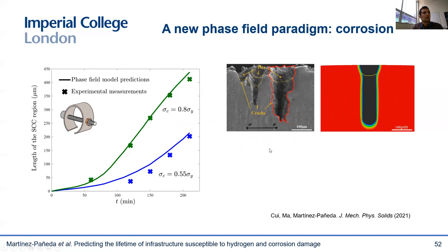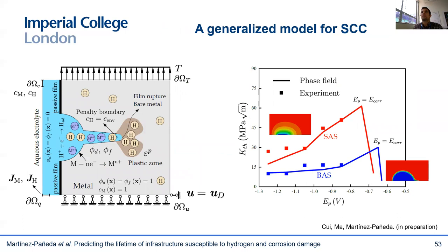I anticipate that we will see a revolution similar to what we have seen with phase field modeling of microstructural evolution and fracture mechanics. Last but not least, we have recently developed a generalized formulation for stress corrosion cracking. Depending on the environment, you could have fractures driven by anodic mechanisms and metal dissolution, or by the uptake of hydrogen — hydrogen embrittlement. So we have developed a multi-phase phase field formulation that combines phase field corrosion and phase field for hydrogen-assisted fracture to capture the interplay between these mechanisms and the transition from one to another with a changing environment, as we see in experiments.